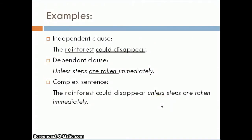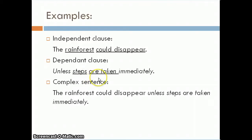Here's an example of an independent clause: 'The rainforest could disappear.' We have the subject 'rainforest,' the verb 'could disappear,' and it's a complete thought, so it can stand alone. On the other hand, 'unless steps are taken immediately' is a dependent clause — it has a subject 'steps' and verb 'are taken,' but the word 'unless' leaves us wanting more information. Connected together, they form the complex sentence: 'The rainforest could disappear unless steps are taken immediately.'